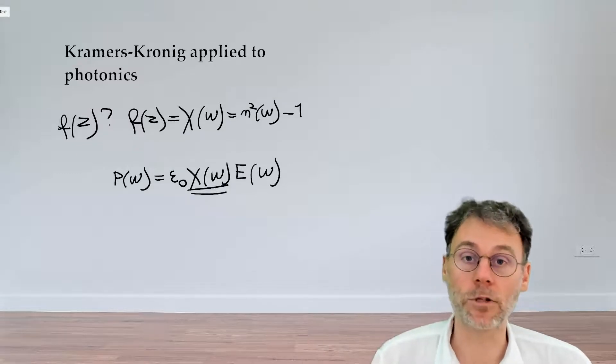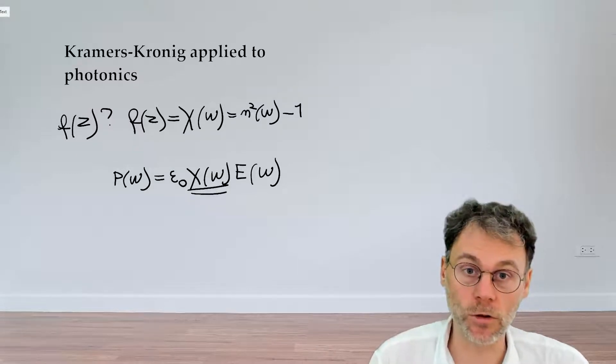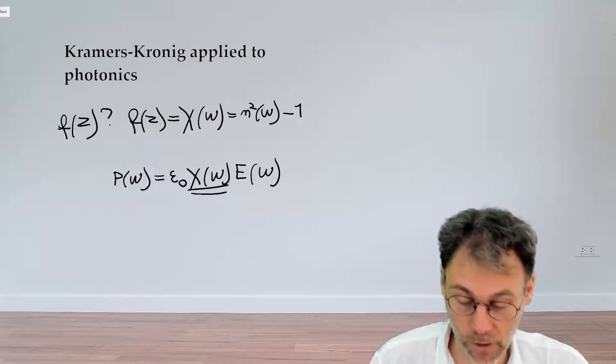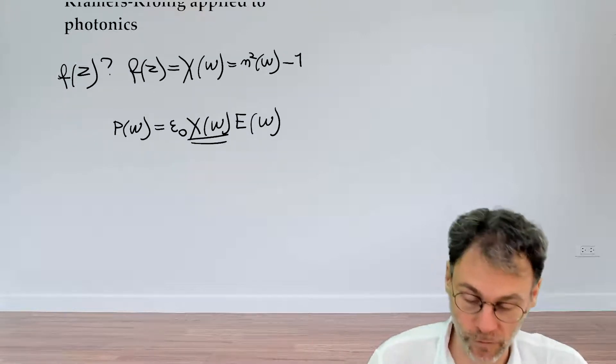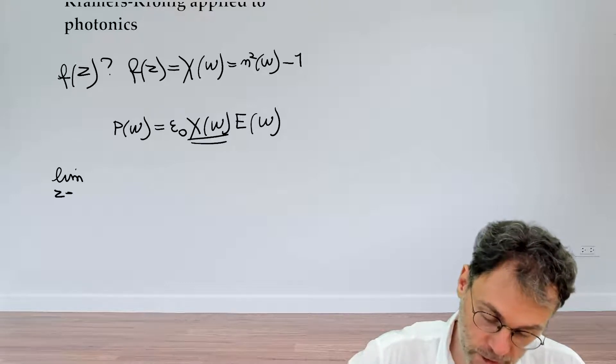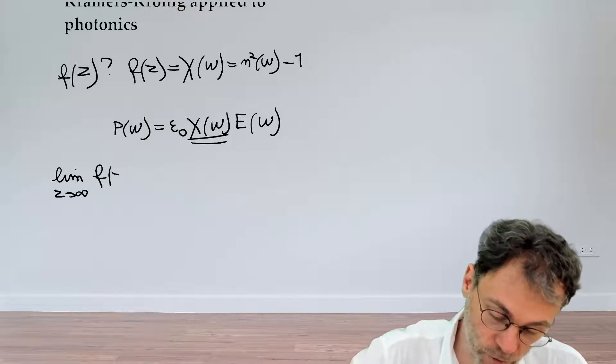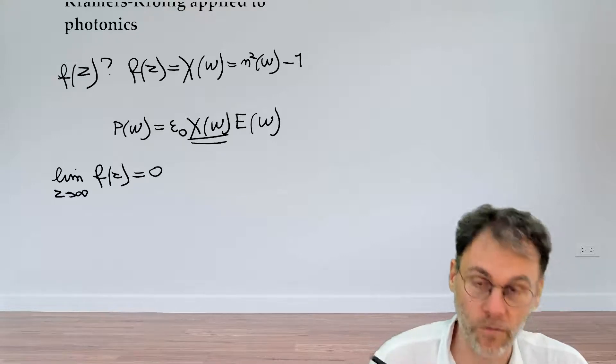Remember, the Kramers-Kronig dispersion relationships don't just hold for any odd function f of z. There is a certain condition that needs to be fulfilled, namely in the limits of z going towards infinity, our function f of z should vanish.